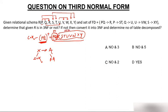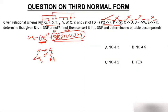Let's check each functional dependency. PQ to R: PQ is a super key — yes, this is in 3NF. P to ST: P is not a super key (PQ is the super key). Are S and T prime attributes? No, they are non-prime. So this dependency is not in 3NF, and therefore the entire table is not in 3NF. Similarly, Q to U: Q is not a super key, U is not a prime attribute — not in 3NF. U to VW and S to XY are also not in 3NF.